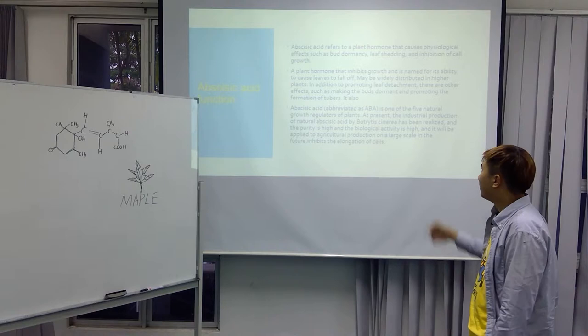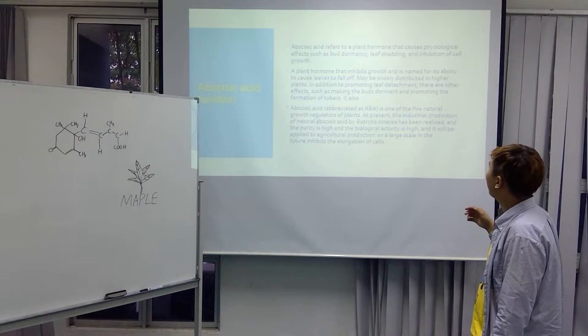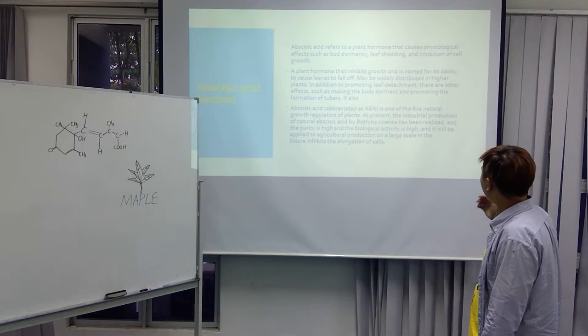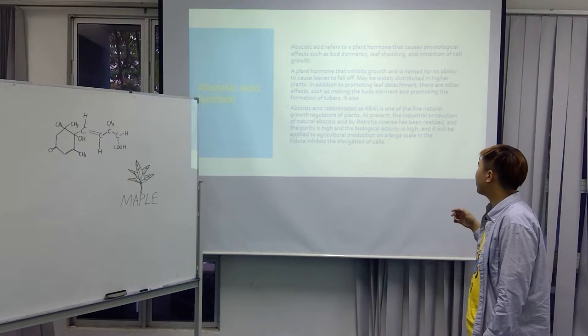And the inhibition of cell growth. This is the first one. The second one is about a plant hormone. A hormone can inhibit its roots and enhance the ability to cause the leaf to fall off. In addition to promoting leaf detachment, there are other effects such as making the substance and promoting the formation of tubers also.